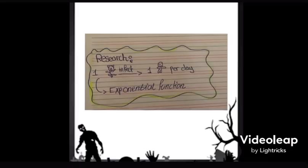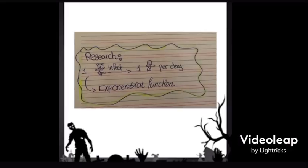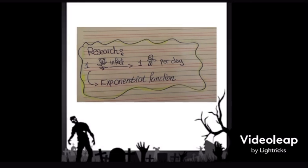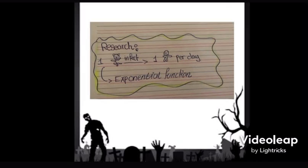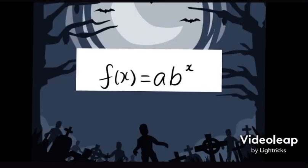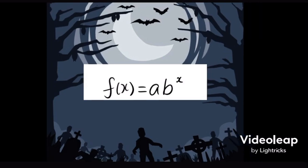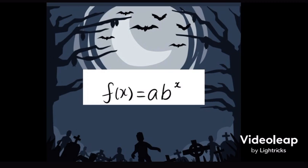My research has shown that each zombie can only infect one human per day, so I've used an exponential function to help everyone understand this situation in depth. For those people who do not know what an exponential function is, it is a function of the form f(x) = a·b^x, where b is a positive real number and x is the exponent.